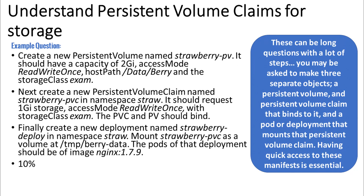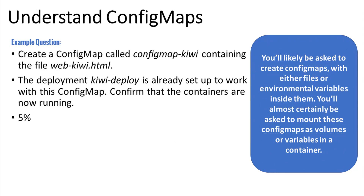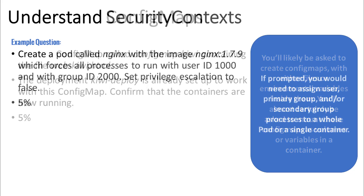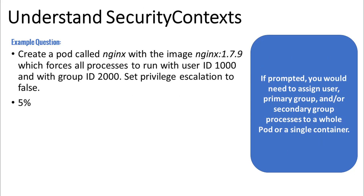Understand persistent volume claims for storage. These could potentially be very long questions with a lot of steps — you may be asked to make three separate objects, such as a persistent volume, a persistent volume claim that binds to it, and maybe a pod or deployment that mounts that persistent volume claim. Having quick access to these manifests is essential. Understand config maps: you'll likely be asked to create config maps with either files or environmental variables inside of them, and you'll almost certainly be asked to mount these config maps as volumes or variables in a container. Understand security contexts — if prompted, you would need to assign user, primary group, and/or secondary group processes to a whole pod or to a single container.